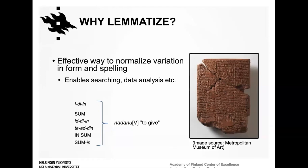Words written in lowercase are translations of syllabic spellings, while those in capital letters are translations of logographic spellings based on Sumerian readings. Akkadians also used logo-syllabic spellings combining logograms and syllabic signs — for example, 'SUM-in,' which consists of the logogram for 'to give' in Sumerian and the syllabic sign 'in' representing the last two sounds of the surface form meaning 'he or she gave.'